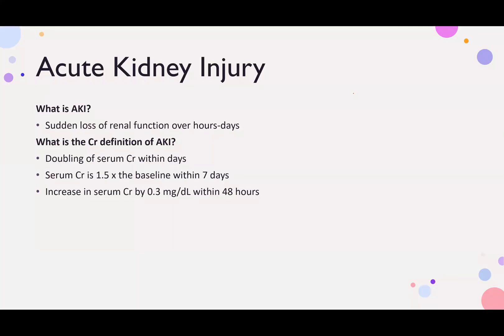AKI, or Acute Kidney Injury — in the definition of AKI, we're going to talk about what AKI is. AKI is a sudden loss of renal function or sudden loss of kidney function over hours or days. It is an acute renal dysfunction.